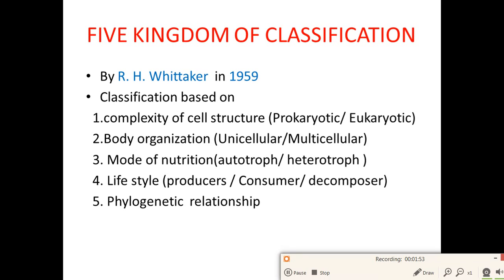Five kingdom classification was given by R. H. Whittaker in 1959. Classification is based on complexity of cell structure — prokaryotic or eukaryotic — body organization — unicellular or multicellular — mode of nutrition — autotrophic or heterotrophic — lifestyle, and role as producers, consumers, or decomposers, as well as phylogenetic relationships.